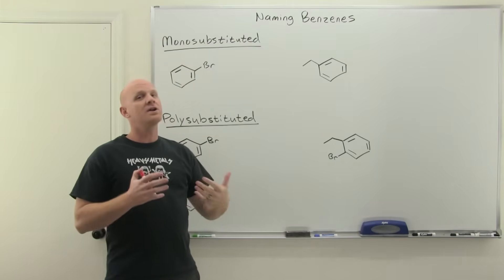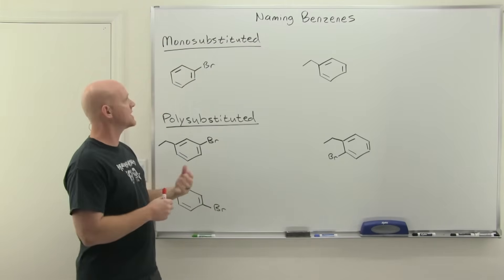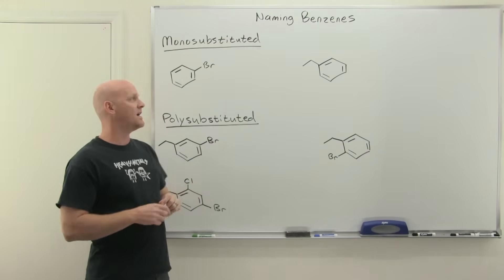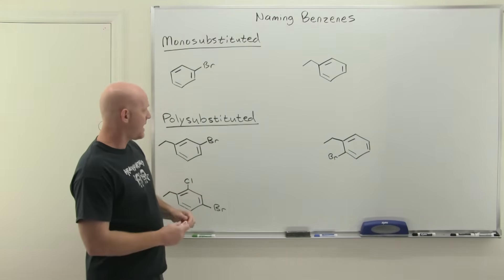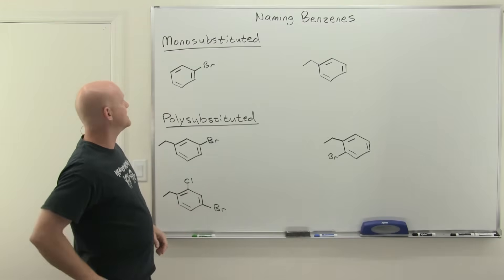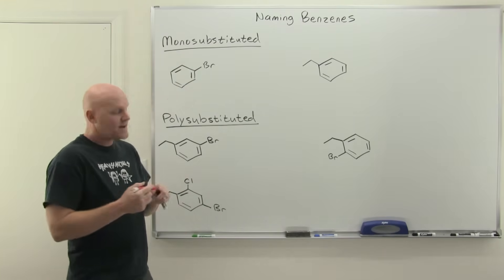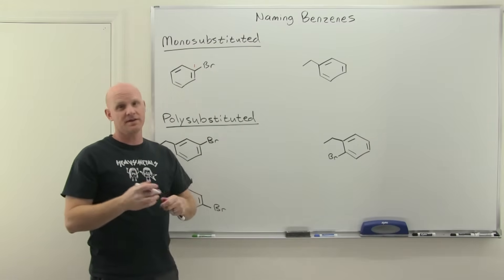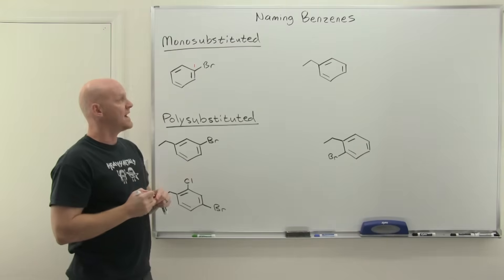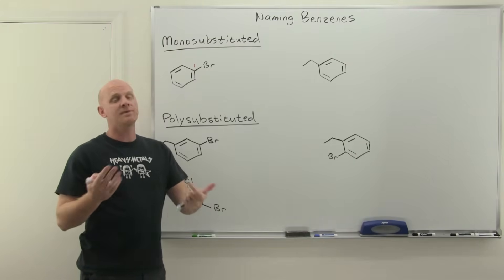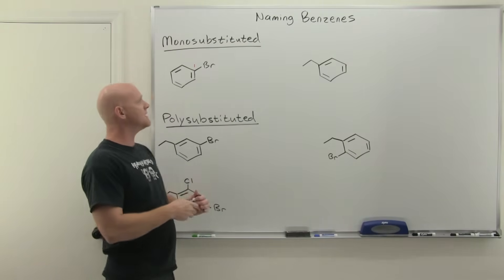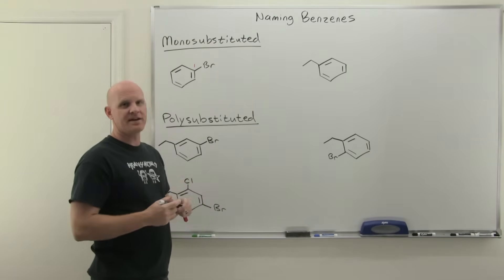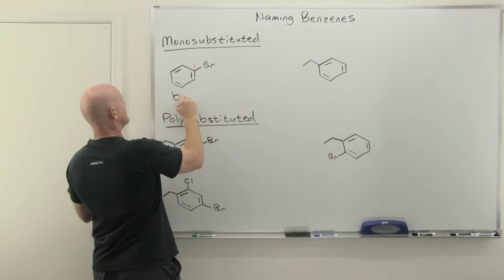We'll start with naming mono-substituted benzenes, which will be very reminiscent of what we saw with cyclohexanes. When you name a mono-substituted benzene ring, your substituent — there's only one — has to be at carbon one. That defines where carbon one is on your benzene with six carbons total. Because it's the only substituent and it has to be at carbon one, it is not included in the name. So instead of saying one-bromobenzene, we just say bromobenzene.